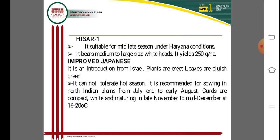Hesar 1 is suitable as a mid-late season variety under Haryana conditions. It bears medium to large-sized white heads that are very attractive in fresh markets. The yield of this variety is approximately 2250 quintals per hectare, making it a very productive and commercially important variety.